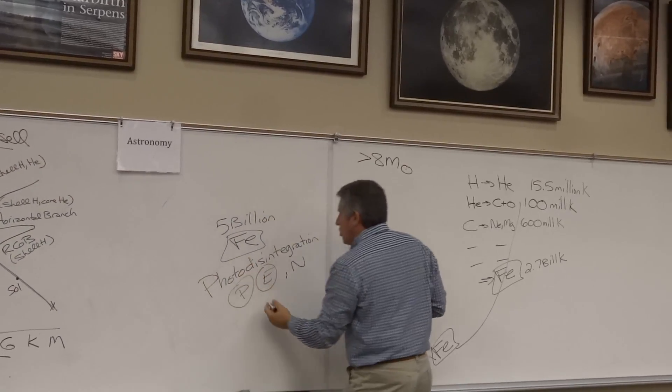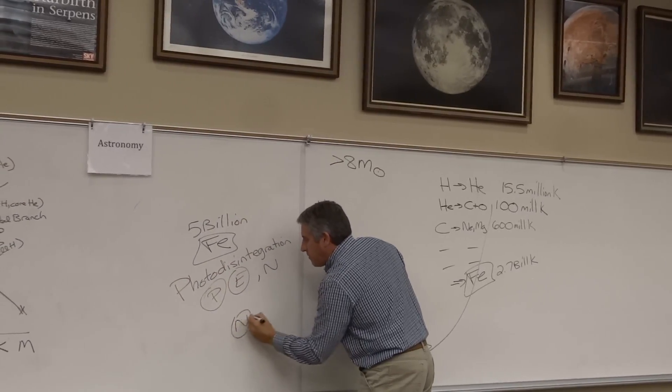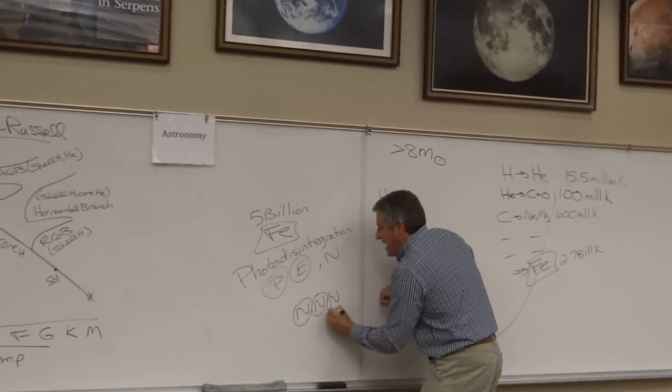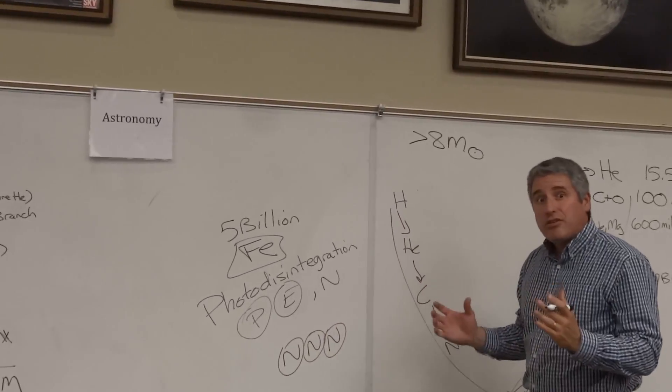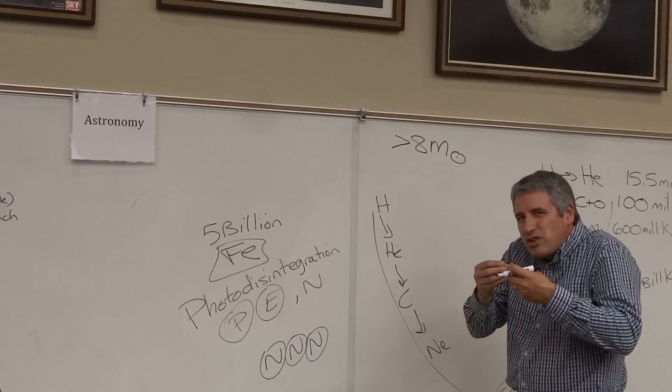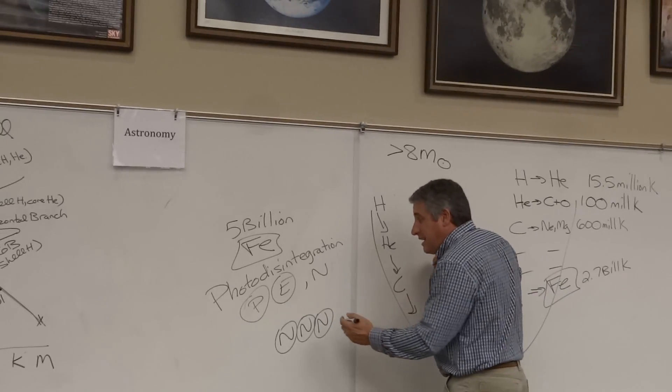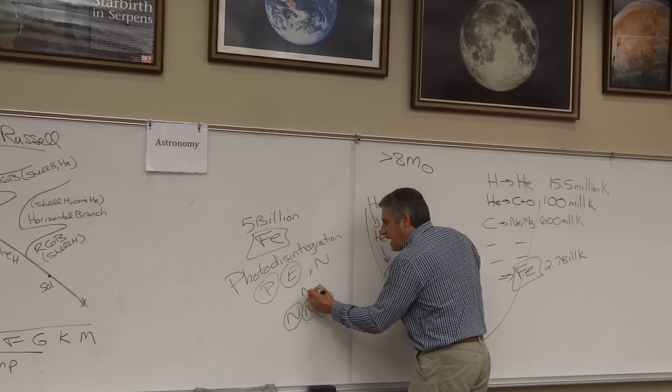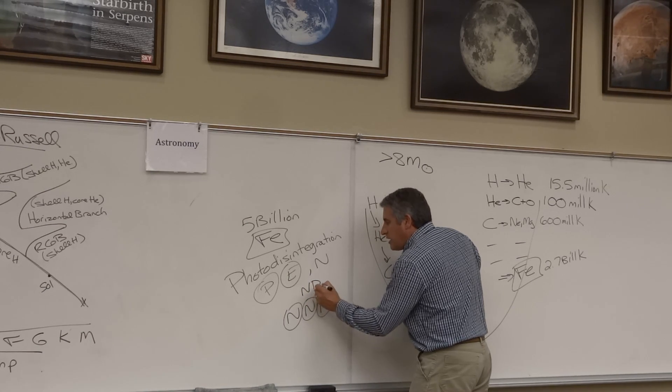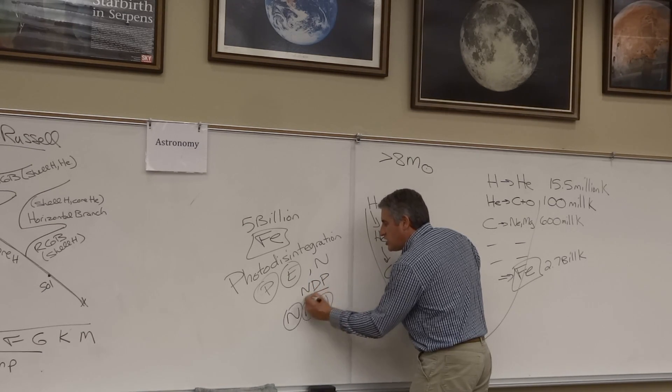The point is the core of this star has become a big ball of neutrons. And they don't want to get any closer together. Just like the electrons before them didn't want to touch, these neutrons are packed in tight. They refuse to collapse further, something known as neutron degeneracy pressure.